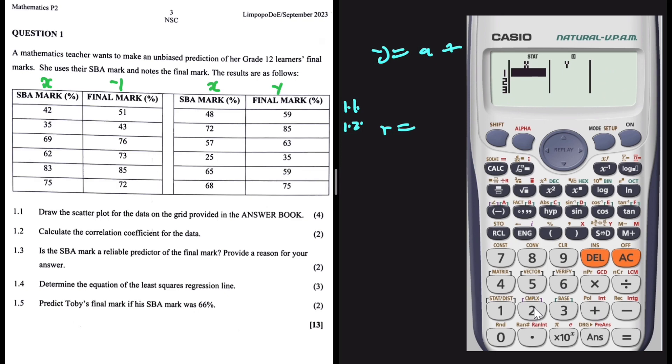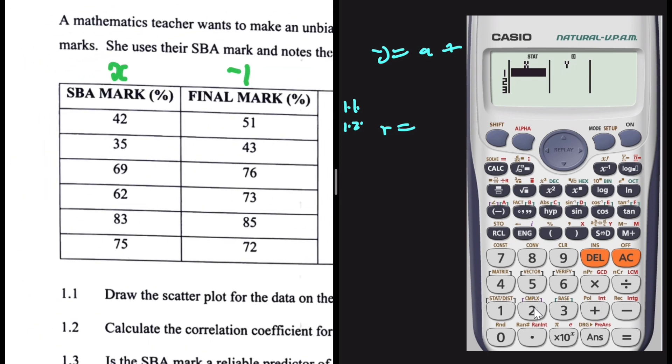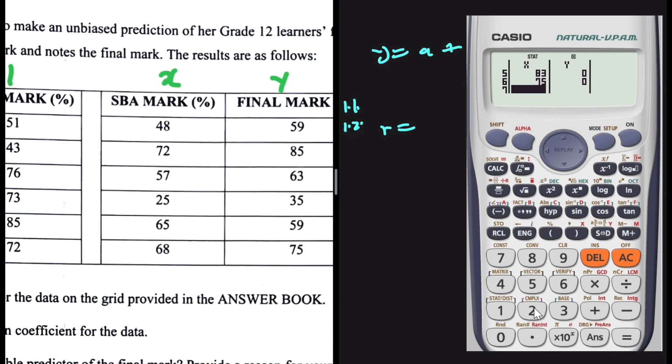Now, I just have to punch in my x values. As you can see, the first x values, I have 42 followed by 35, 69, 62, 83, and 75. But then my x values are still carrying on. I have 48, 72, 57, 25, 65, and 68.